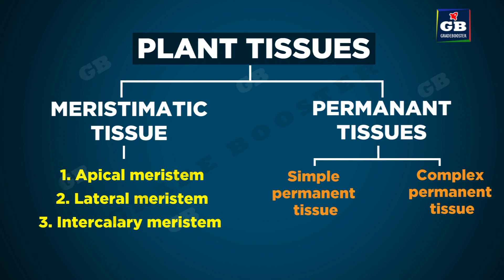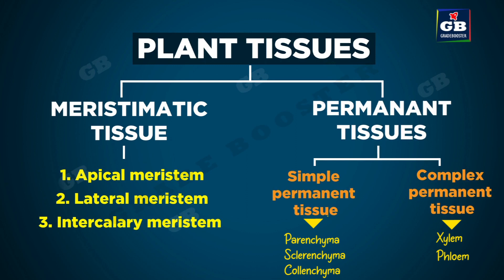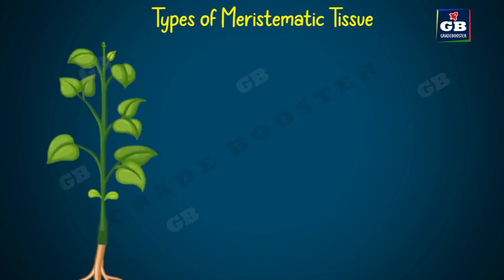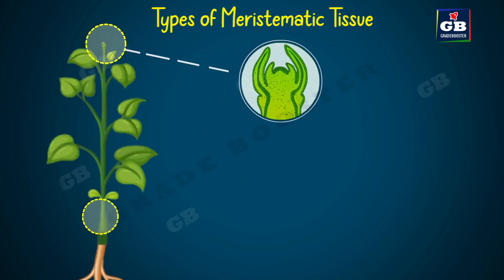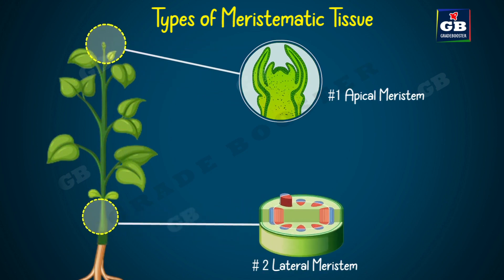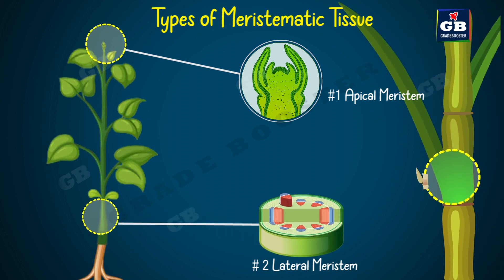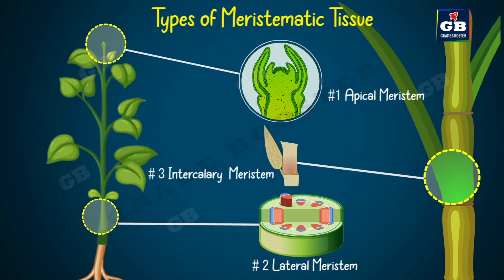Examples of simple permanent tissues are parenchyma, sclerenchyma, and collenchyma. Xylem and phloem are the complex permanent tissues. The meristematic tissue of plants is classified into three types depending upon its location: apical meristem, lateral meristem, and intercalary meristem.